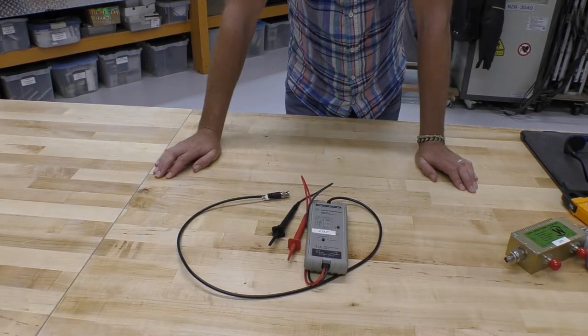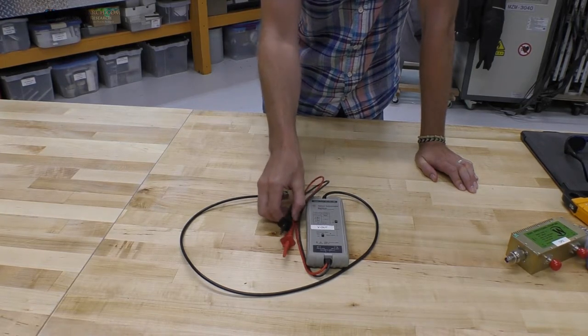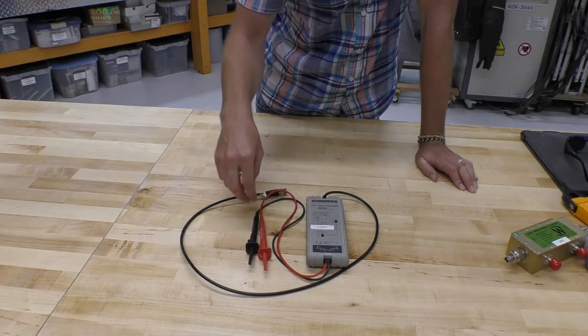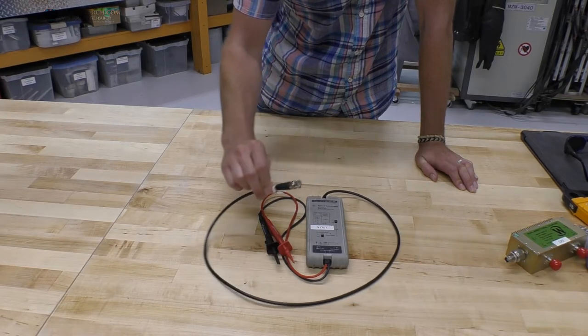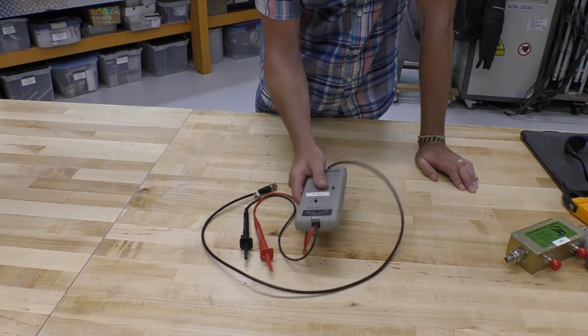And here we have a voltage probe. Now, this looks a little bit more complicated than your normal type of voltage probe, which you may be familiar with using an oscilloscope via BNC. The reason why it looks a little bit more complicated is because you've got this box of electronics.